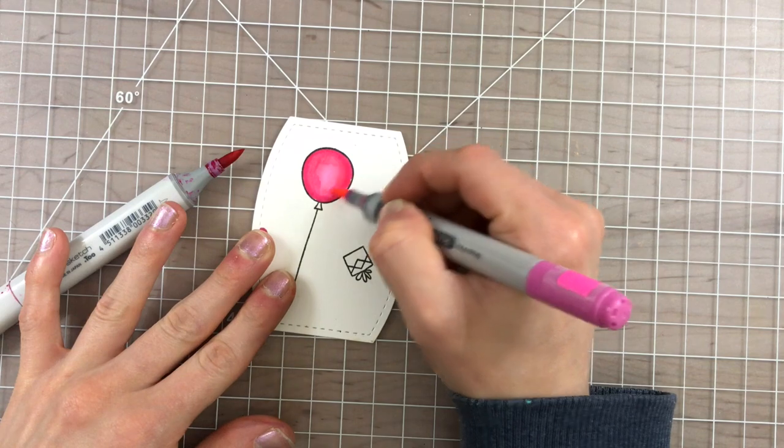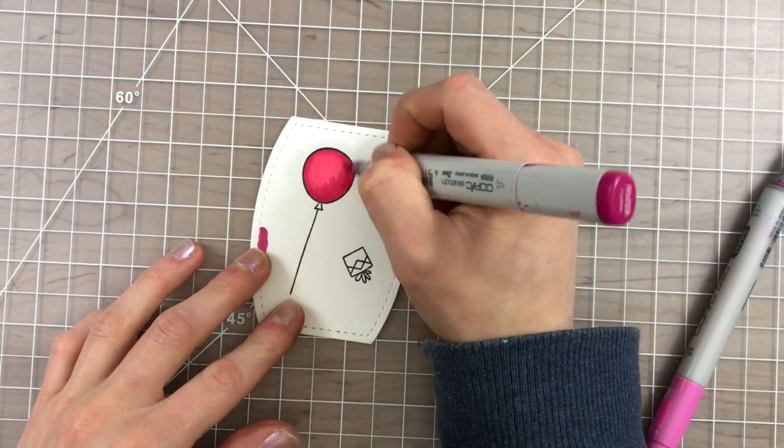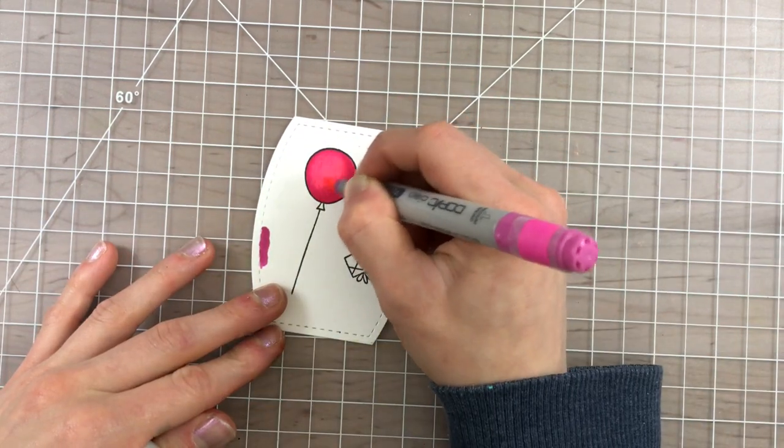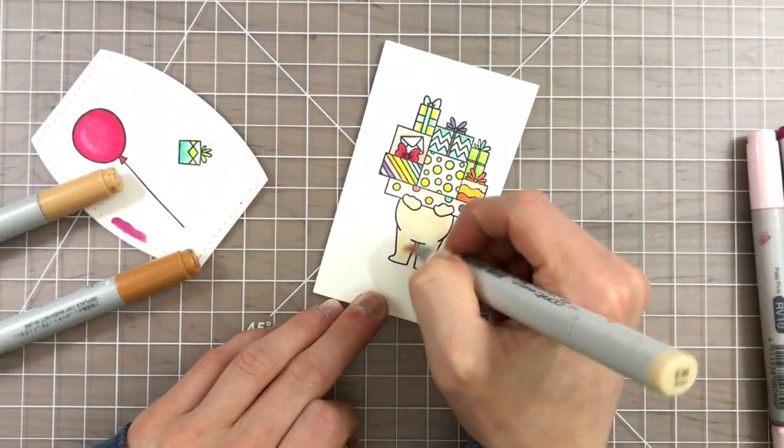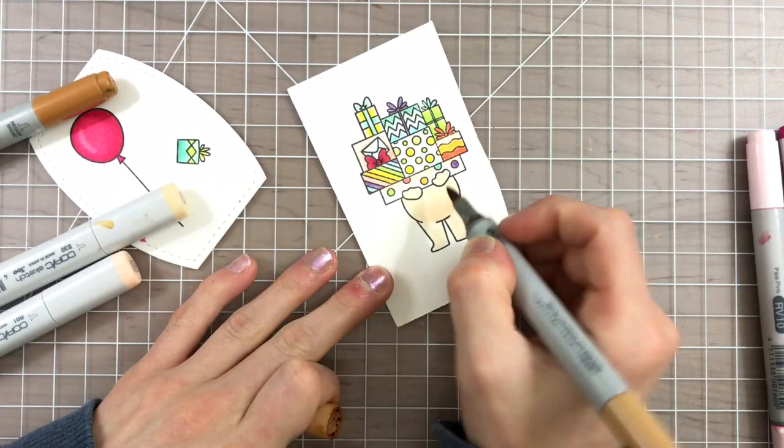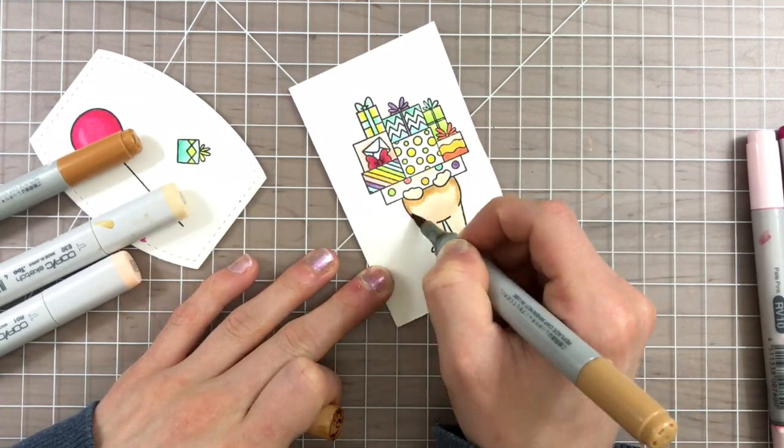I also colored in the balloon using a couple of pink markers. I really loved these pink colors. I also added a little bit of a highlight with an R10 and for the bear itself I chose just some neutral browns. I really love the E30 family so I used those to color in the bear.